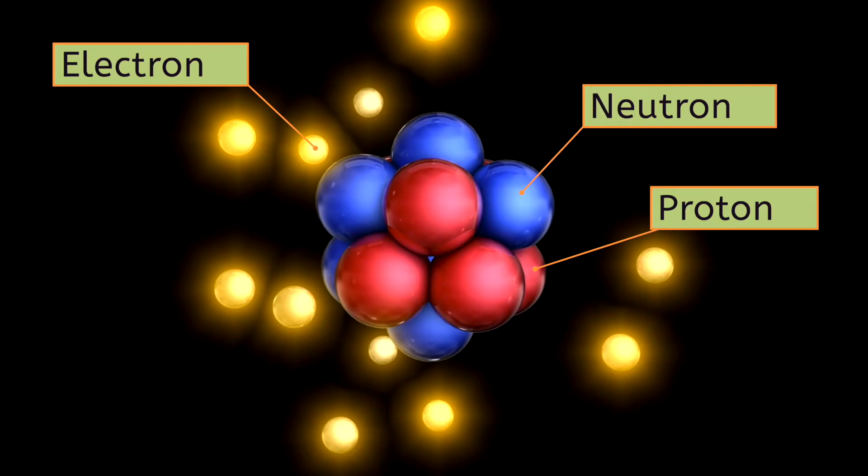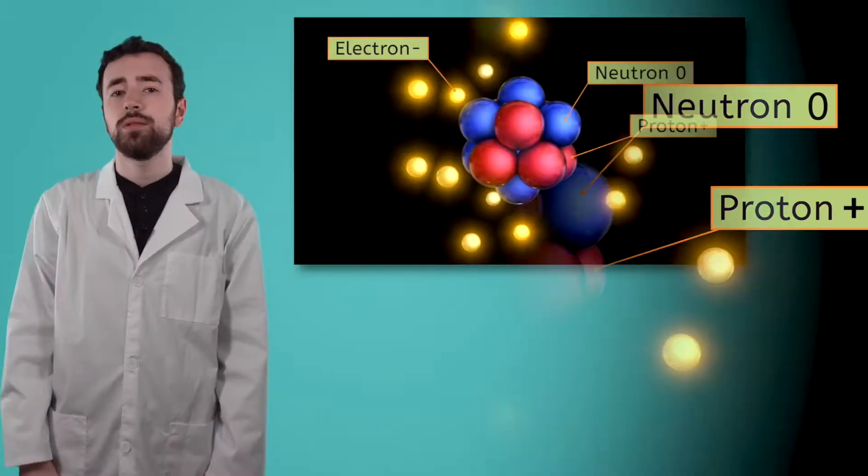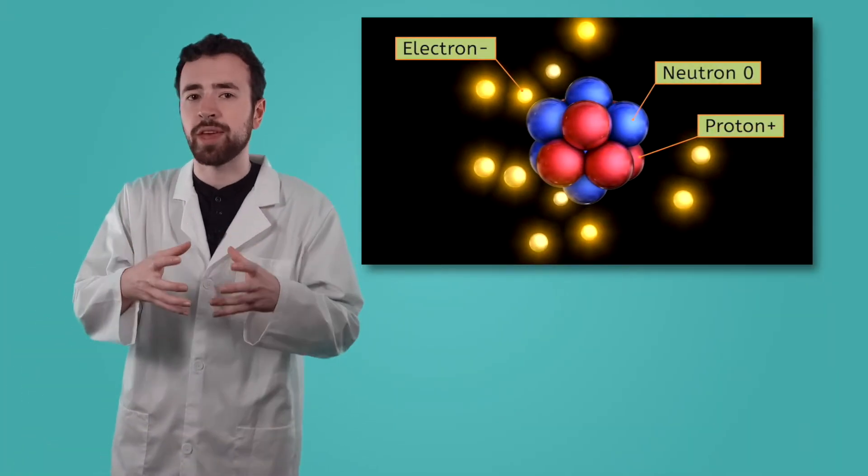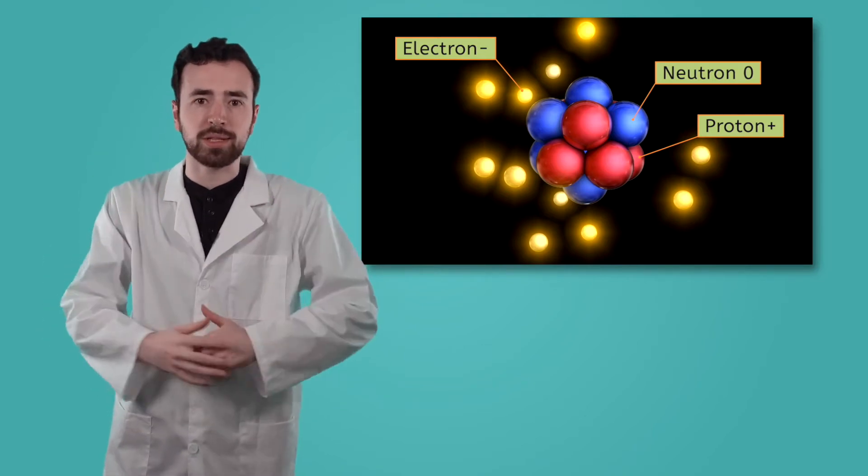Each of those particles carries a charge. Protons carry a positive charge, electrons carry a negative charge, and neutrons are neutral. They have no charge. The protons and neutrons are clumped together in the center of the atom, while the electrons zoom around the outside.